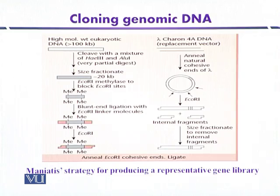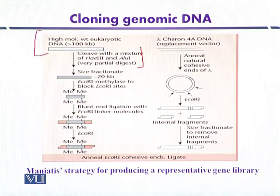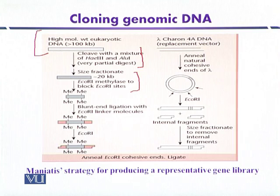To summarize the Maniatis strategy for producing a representative genomic library: the source eukaryotic high-molecular-weight DNA is first digested with two restriction enzymes, EcoRI and AluI, allowing partial digestion to generate fragments of around 20 kilobase suitable for cloning into bacteriophage lambda. After fragmentation, the DNA is treated with EcoRI methylase to methylate EcoRI sites so they are no longer cut. Then linker molecules containing one EcoRI target site on each side are joined to the fragments.